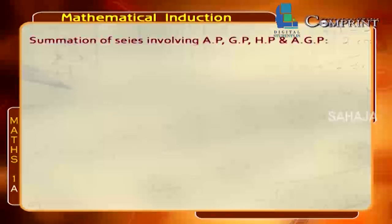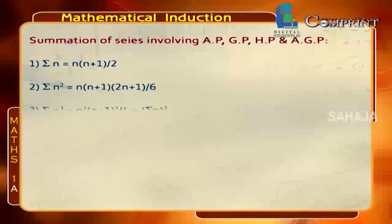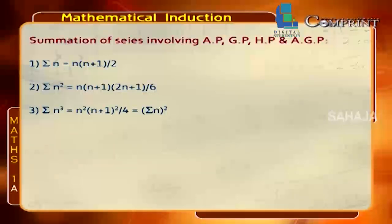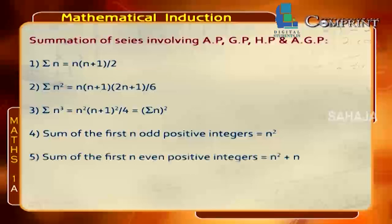Summation of series involving AP, GP, HP, and AGP: Sigma n equals n(n+1)/2. Sigma n² equals n(n+1)(2n+1)/6. Sigma n³ equals [n(n+1)/2]², which equals (Sigma n) whole squared. The sum of the first n odd positive integers equals n². The sum of the first n even positive integers equals n(n+1).